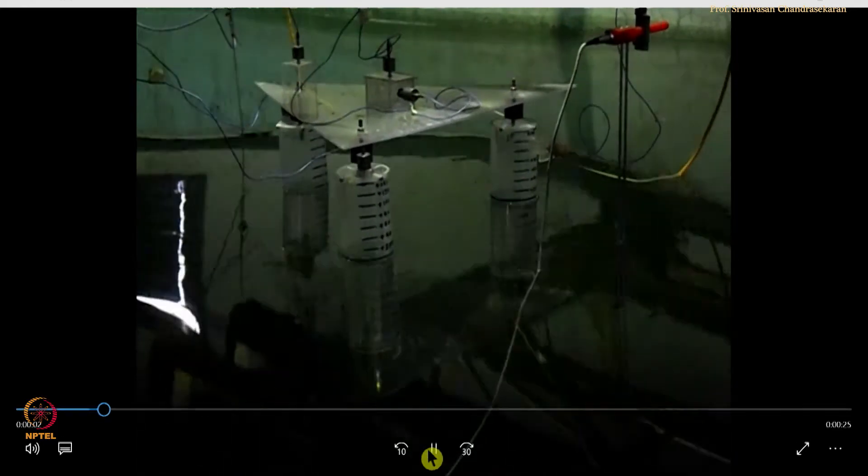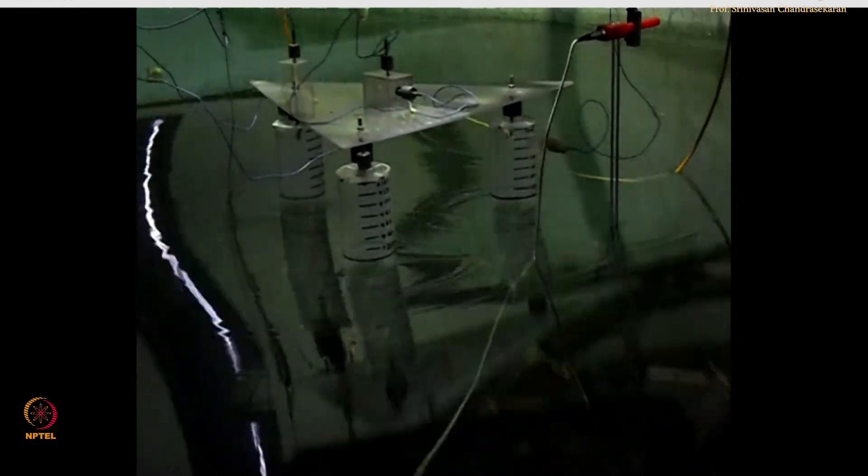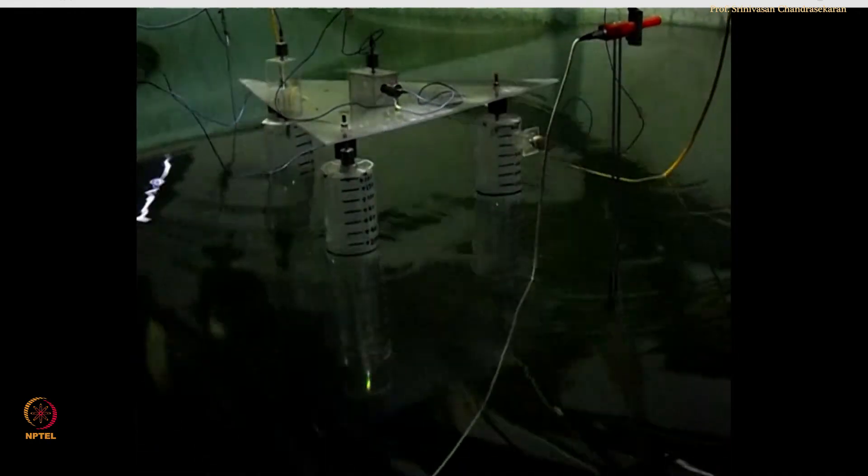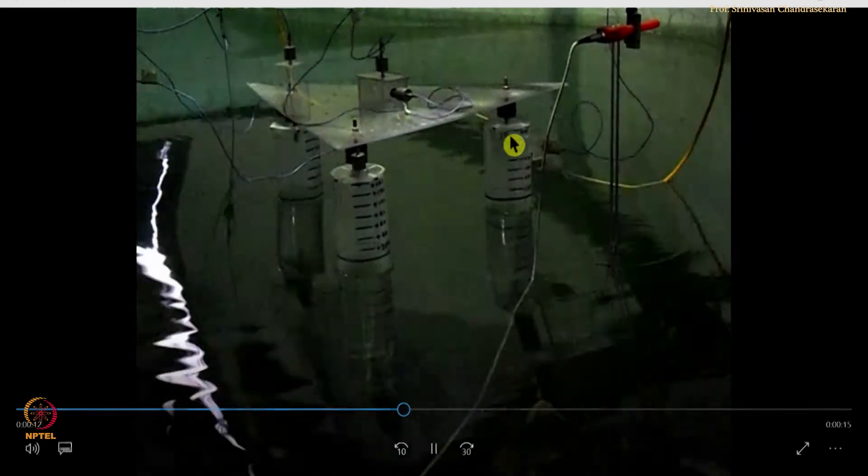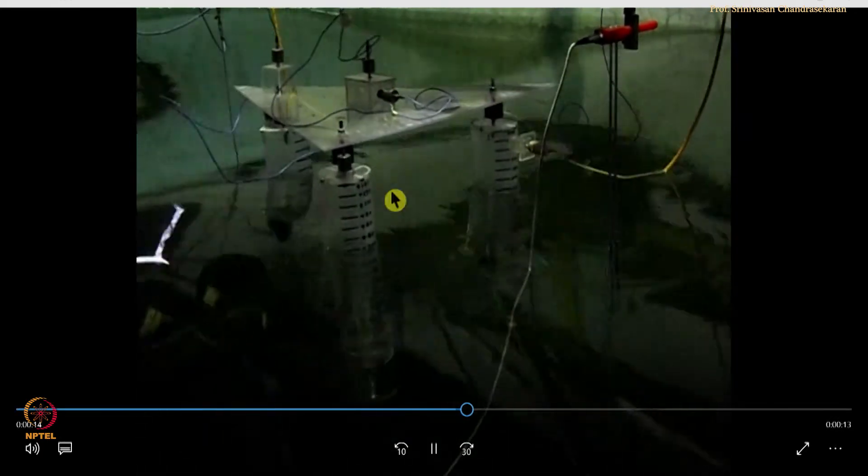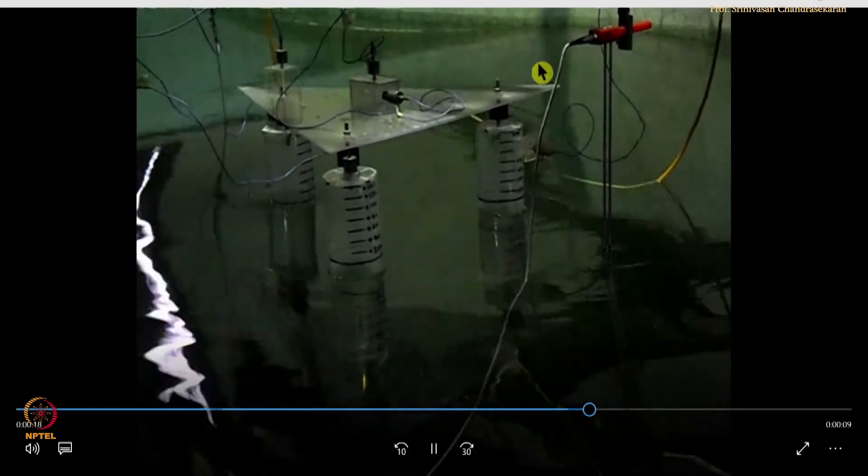The video which is running on the screen is the video of a triangular deck triceratops. The wave is attacking the buoyant legs, the ball joints are placed here and the buoyant legs are getting displaced in rotation degrees of freedom, but the deck is still remaining horizontal.